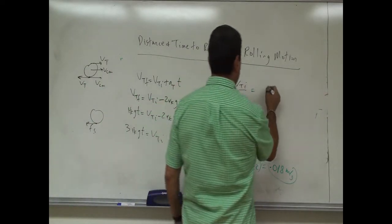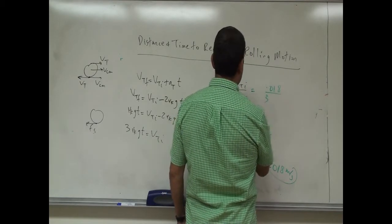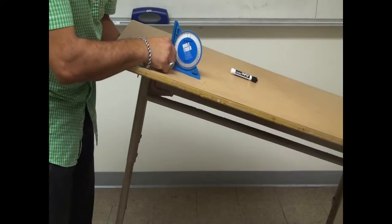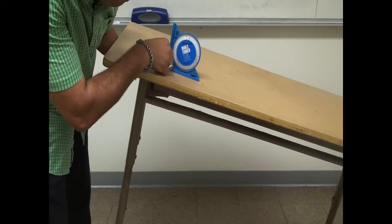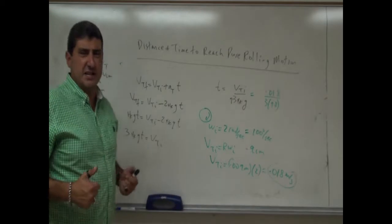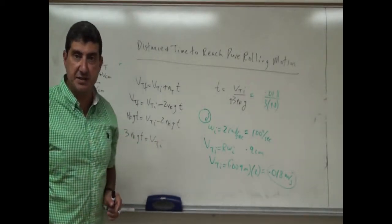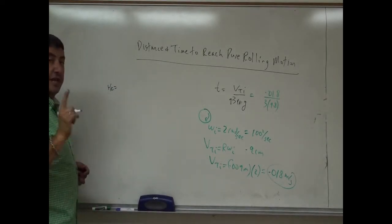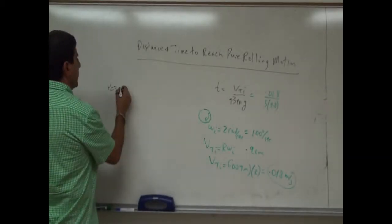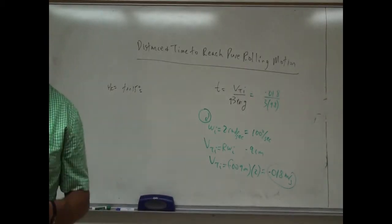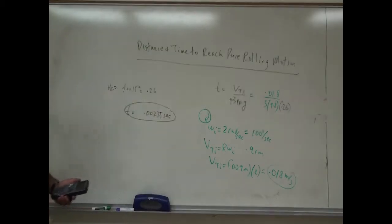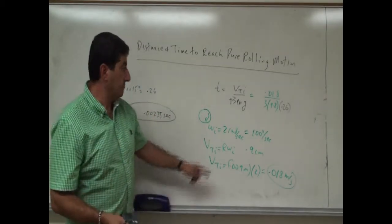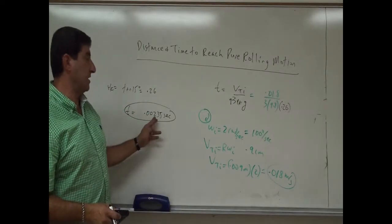Dividing 0.018 by 3·μk·9.8 gives the time. The angle at which the marker slides is about 15°, so μk = tan(15°) ≈ 0.26. This gives t ≈ 0.00235 seconds, basically about 2 milliseconds. Right away it establishes pure rolling motion. If I give it a faster spin of 3, 4, or 5 rad/s, the time will be longer and longer.